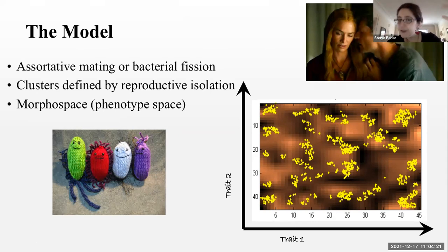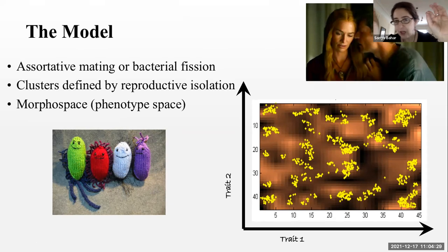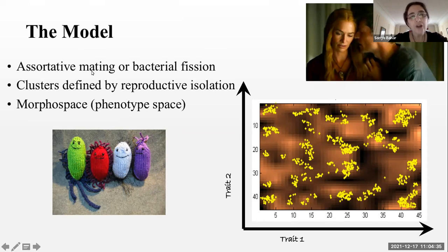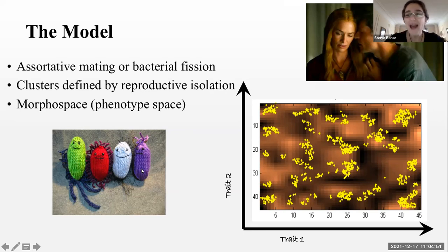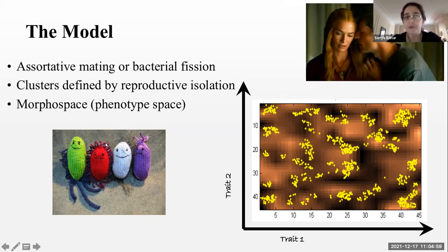We're looking at a computational model for evolutionary dynamics for organisms that are just represented by dots in a phenotype space — very much a physicist's eye view. In our model, we can simulate either assortative mating, where organisms mate with someone who is very phenotypically similar, or organisms that split and undergo bacterial fission. So two different reproduction schemes.